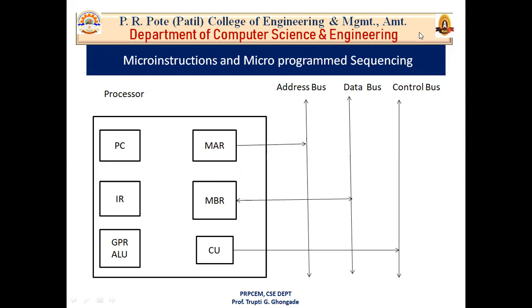Now let's start with micro operations. This is the first step to build the control unit. To build a control unit, you need to understand what it basically does — a control unit generates control signals. These control signals cause small activities inside the processor, and those small activities are called micro operations. A program is a set of instructions, and instructions require micro operations performed by the processor.